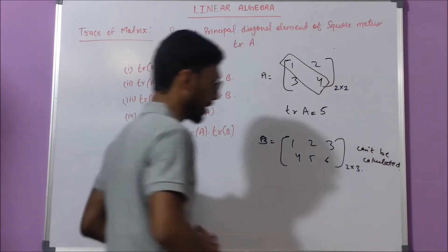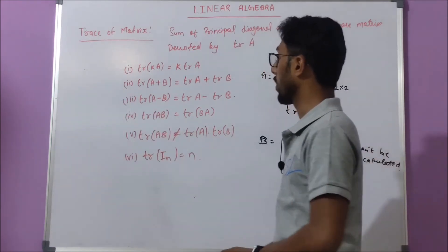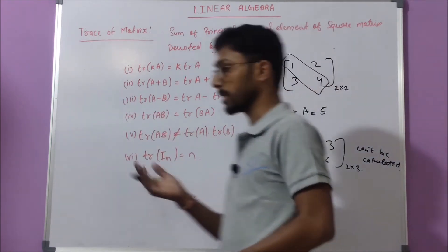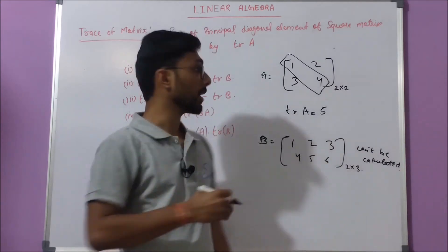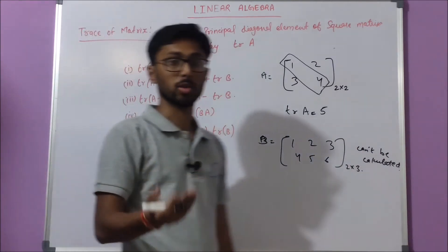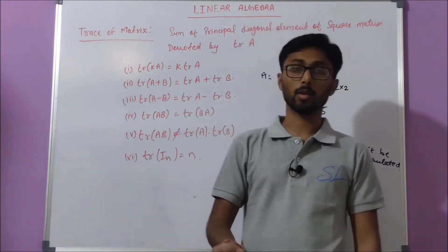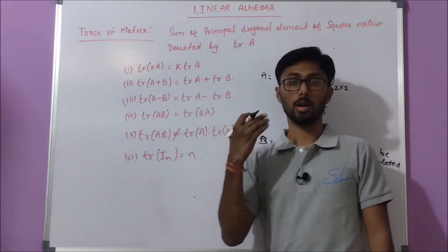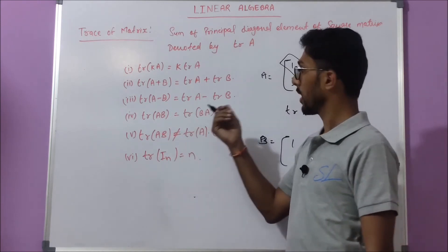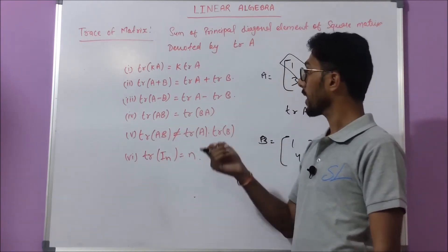Now let's look at some properties. Trace of kA equals k times trace of A. These properties can appear in multiple select questions in your school exam, GATE, or other exams, so you must write these in your copies and review them before going to the exam.